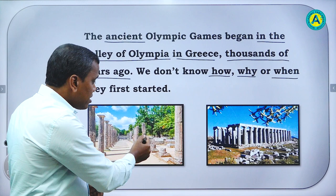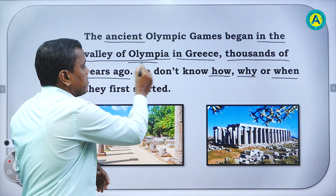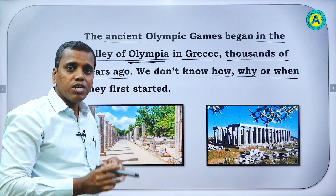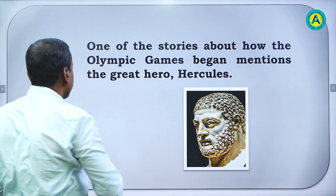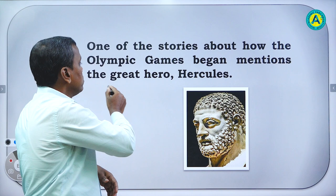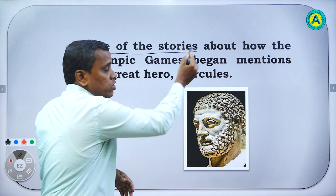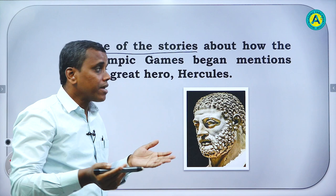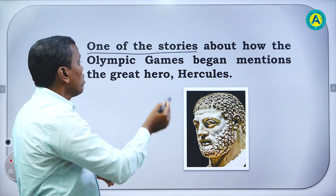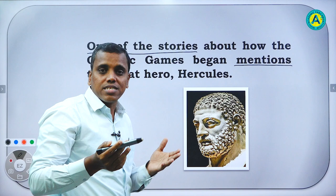These are the pictures of the ancient Olympia — an ancient site, very old, thousands of years ago. But we don't really know much about it. One of the stories about how the Olympic games began — if you can see 'one of the stories', that means there are many stories, many types of legends. It mentions the great hero Hercules — it speaks about the great hero Hercules.